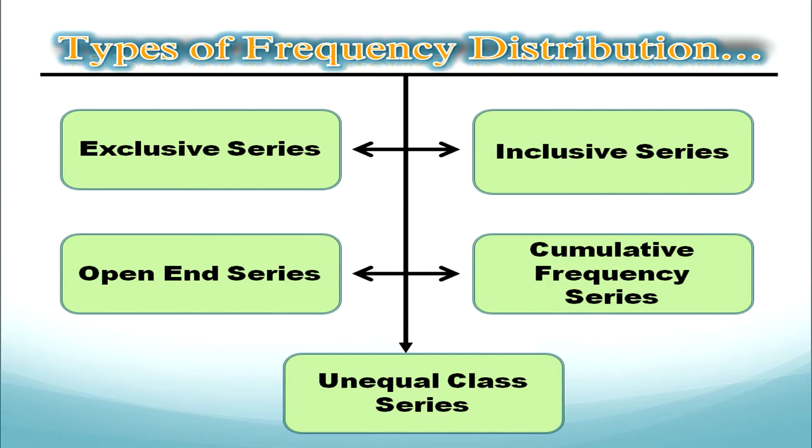There are 5 types of frequency distribution we are going to learn: the first is exclusive series, the second is inclusive series, the third is open end series, the fourth is unequal class series, and the fifth is cumulative frequency series. We are going to discuss each series in detail, learn its key features, and look at examples.